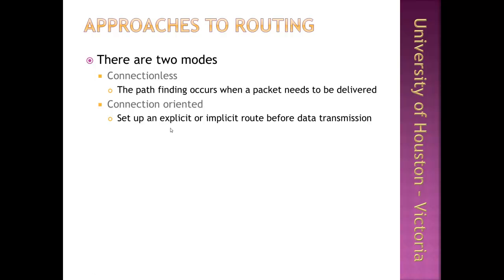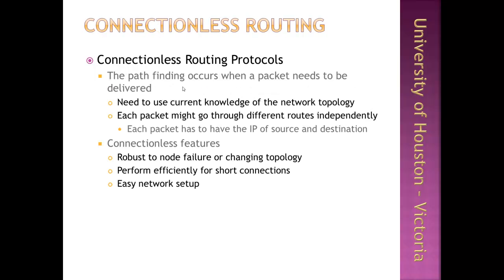In connection-oriented mode, an explicit or implicit path from the source node to the destination must be set before transmission begins, and all packets then flow along the same path in the node graph from source to destination.